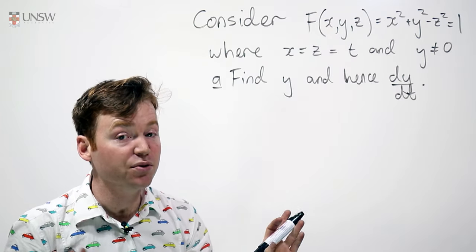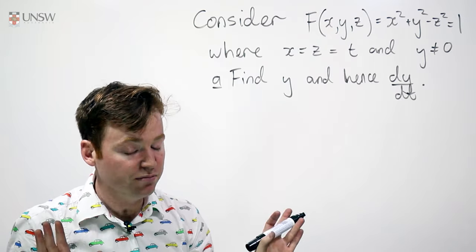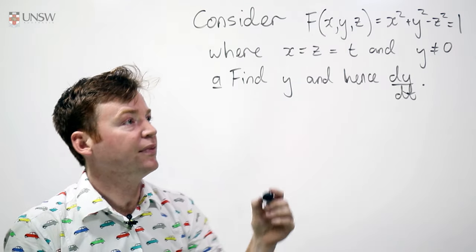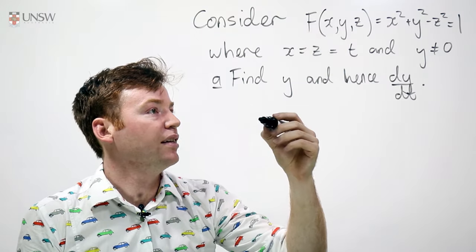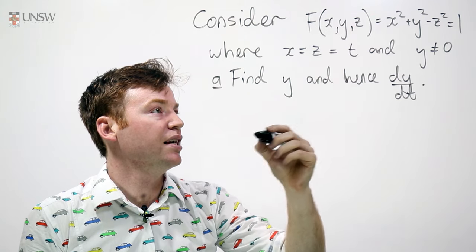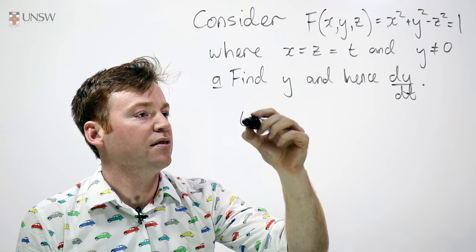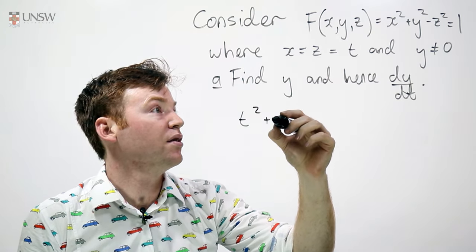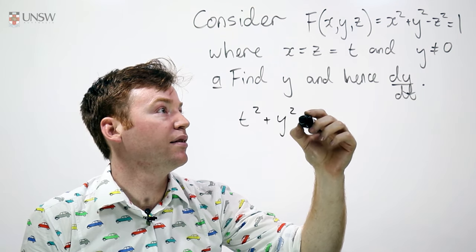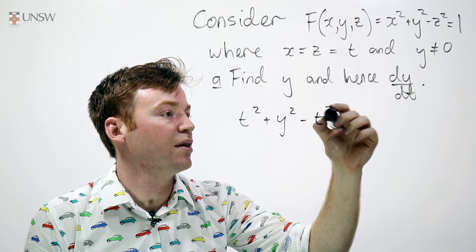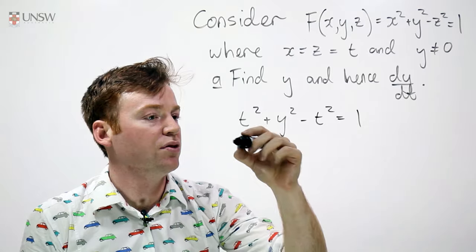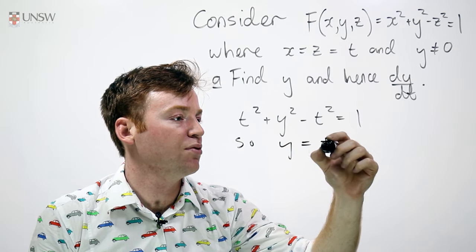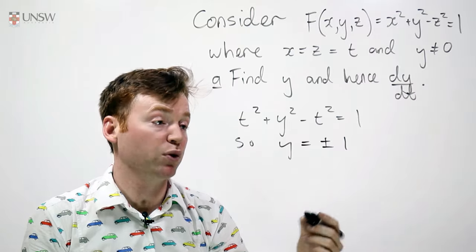So I can actually do this question without using the chain rule. That's fine. Sometimes you can do that. In particular, if x is equal to z is equal to t, then the equation becomes t squared plus y squared minus t squared is equal to 1. So y is equal to plus or minus 1.